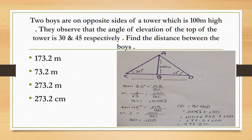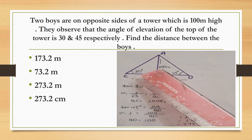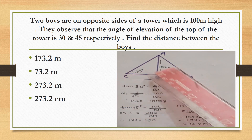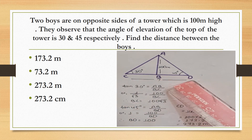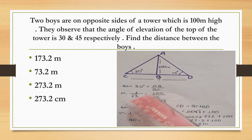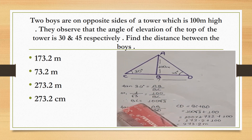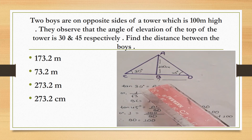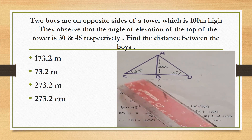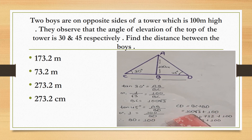2 boys are on opposite sides of a tower which is 100 meters high. They observe that the angle of elevation of the top of the tower is 30° and 45° respectively. Find the distance between the boys. Let AB be the tower of 100 m, and C and D be the positions of the boys. Angle ACB is 30° and angle ADB is 45°. In triangle ABC: tan30° = 100/BC, so BC = 100√3. In triangle ABD: tan45° = 100/BD, so BD = 100. Therefore, CD = BC plus BD = 100√3 + 100 = 273.2 meters.